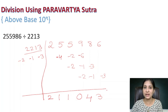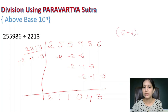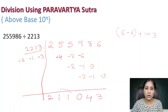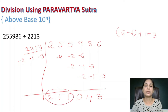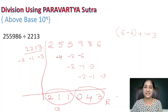Now determine the quotient and remainder. The dividend has 6 digits and the divisor has 4 digits: 6 minus 4 plus 1 equals 3 digits in the quotient. Counting from the left, 211 is the quotient part and 43 is the remainder part. It is very simple.